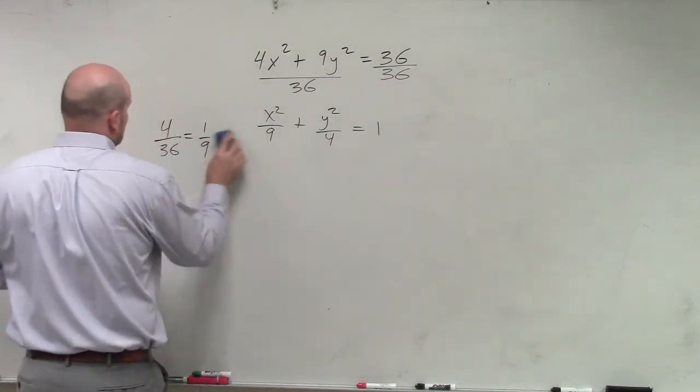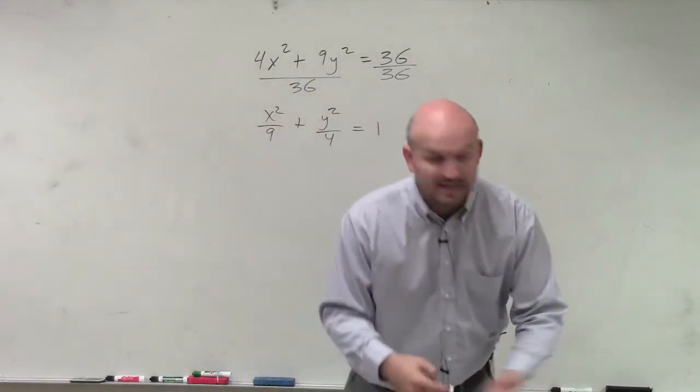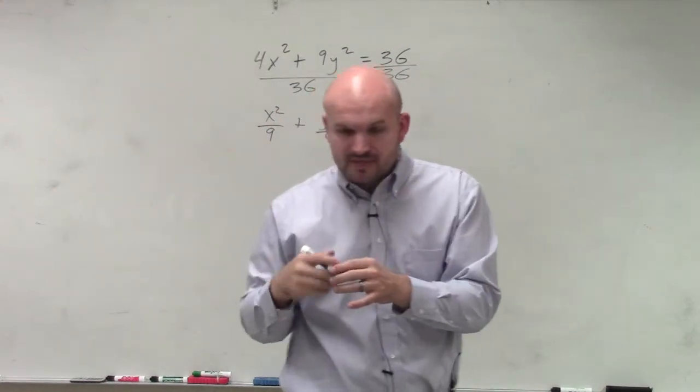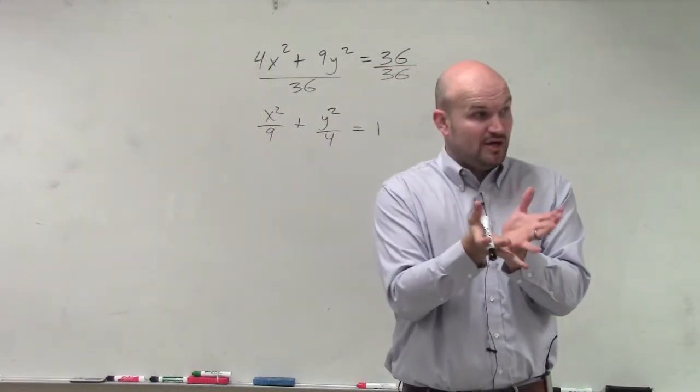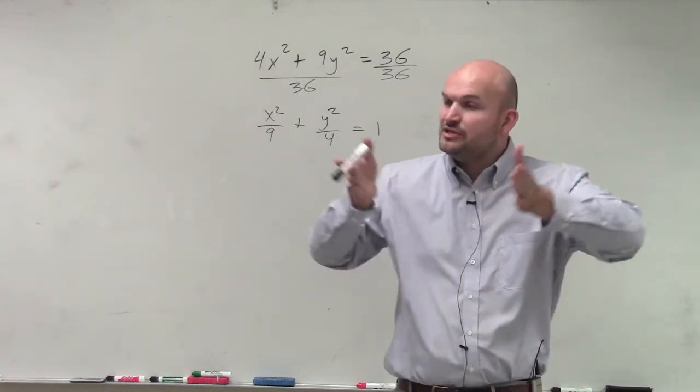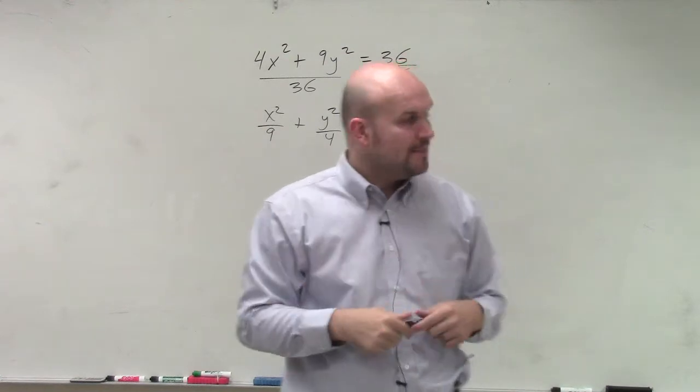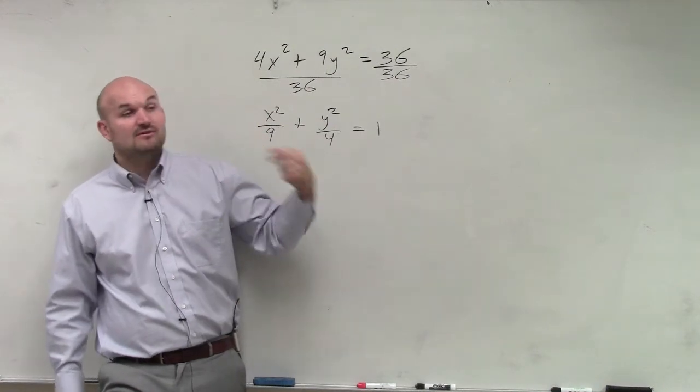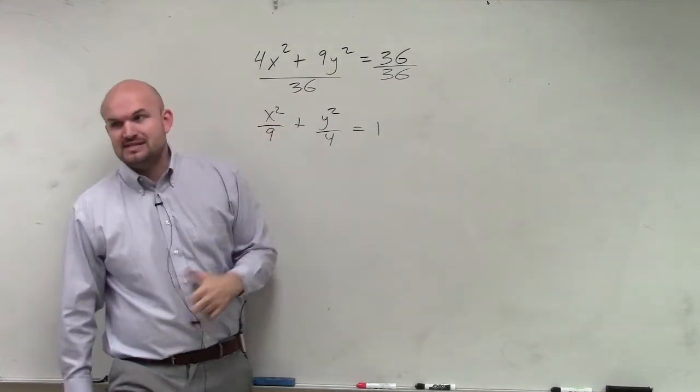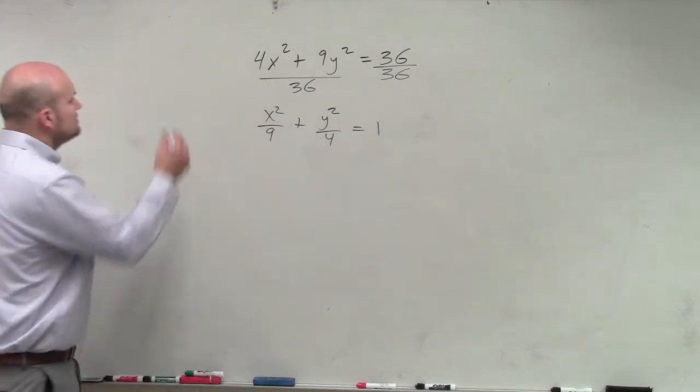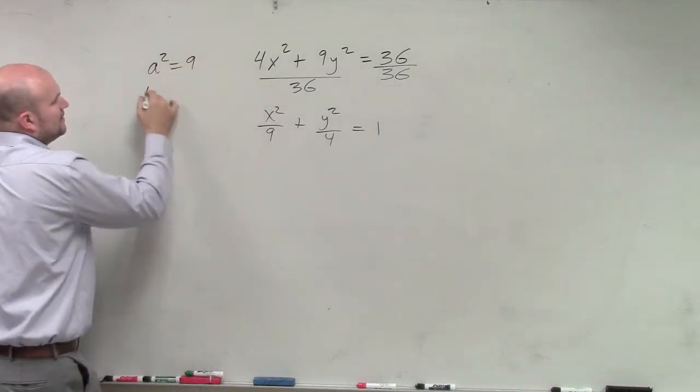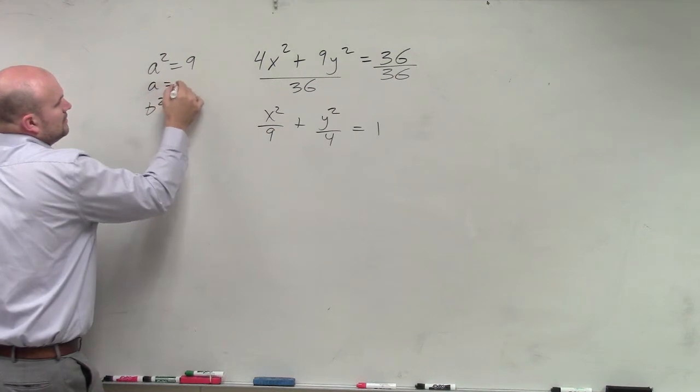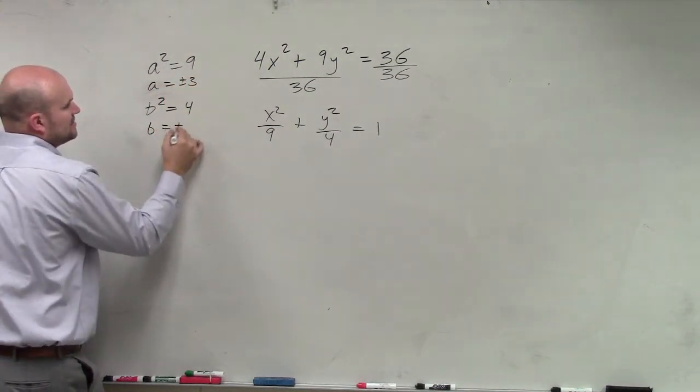Now that we have it into our format, we can identify our a and our b. It's really important to know where a and your b are, because a is the distance from your center to your vertices, which lie on your major axis. Does anybody remember what was larger, a or b, in this case? a was always larger for an ellipse, right? So therefore, a squared in this case has to be 9. a squared equals 9, b squared equals 4. So a equals plus or minus 3, and b equals plus or minus 2.